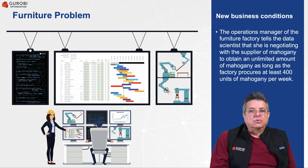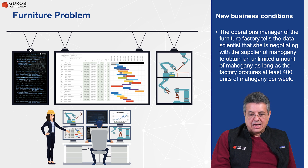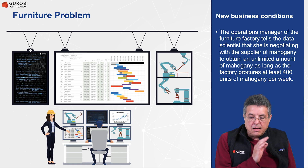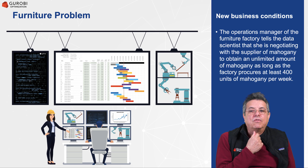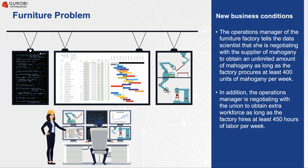What are the new business conditions? The operations manager of the furniture factory tells the data scientist that she is negotiating with the supplier of mahogany to obtain an unlimited amount of mahogany, as long as the factory procures at least 400 units of mahogany per week. Also, the operations manager is negotiating with the union to obtain extra workforce as long as the factory hires at least 450 hours of labor per week.